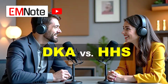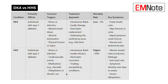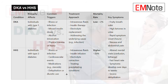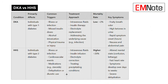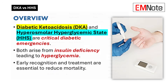Welcome back everyone. Today we're tackling two serious diabetic complications: DKA and HHS — diabetic ketoacidosis and hyperosmolar hyperglycemic state. We're going to unpack those acronyms, explore the similarities and differences, and give you the tools to recognize and treat these conditions effectively. Because the stakes are high — both DKA and HHS can be life-threatening, but with proper management, survival is possible.